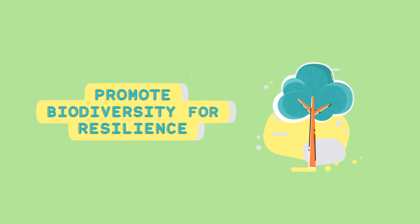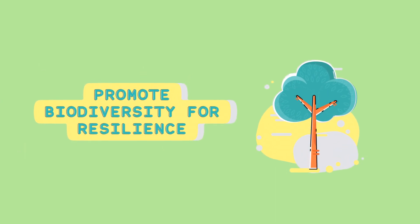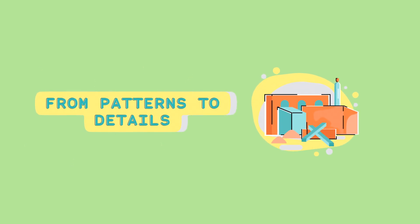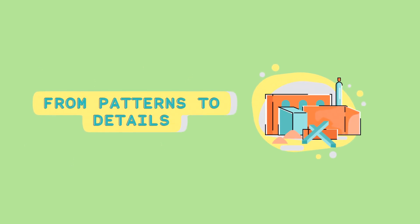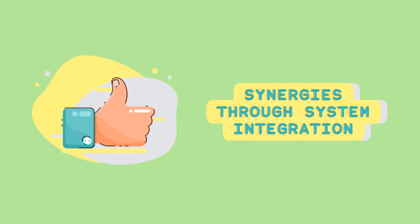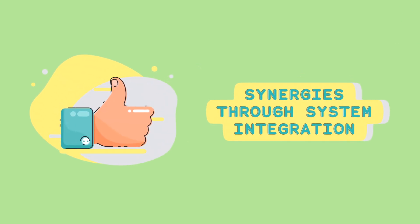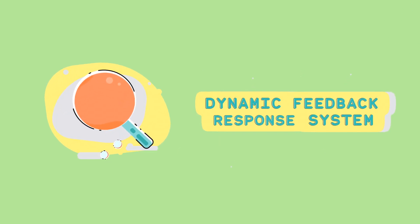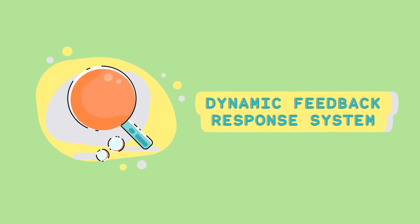Use and value diversity: promote biodiversity to increase resilience and stability. Do not waste: minimize waste and use resources efficiently. Design from pattern to element: start with the big picture and then design the details. Integrate rather than segregate: combine different elements of the system to create synergies. Use the edge: utilize the edges between different elements to maximize productivity. Respond to feedback: continuously monitor and adjust the system based on feedback.